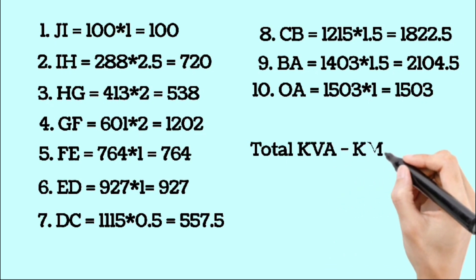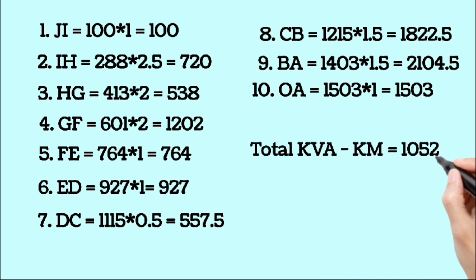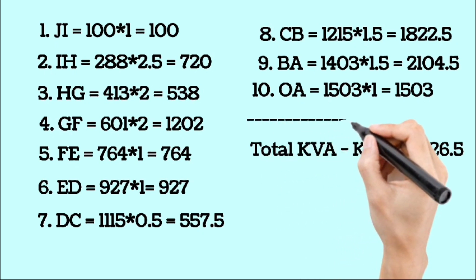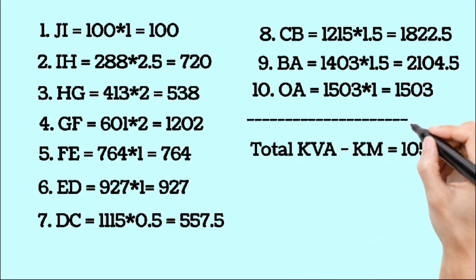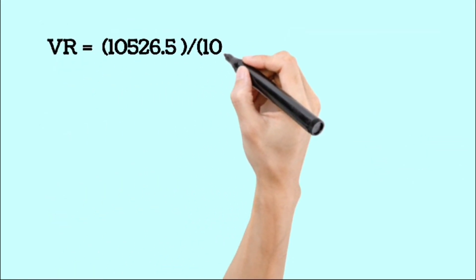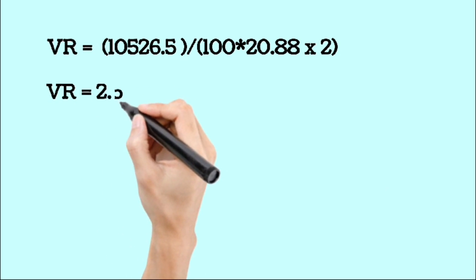Now substituting these values into the voltage regulation formula as we discussed earlier, finally the calculated voltage regulation is 2.52 percent. In this video we learned how to calculate voltage regulation in an 11 KV line at the tail end.